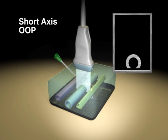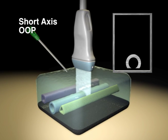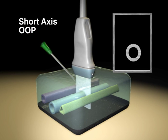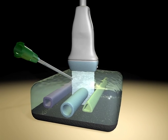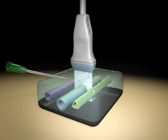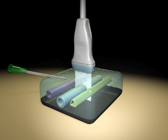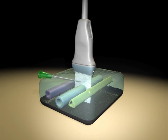This simulation shows a cylindrical structure imaged on short axis. The needle enters from outside the scan plane at the midpoint of the transducer and advances toward the plane of imaging, where it will appear as a hyperechoic dot. Tilting the transducer can be used to locate the needle tip and guide it into the vessel.